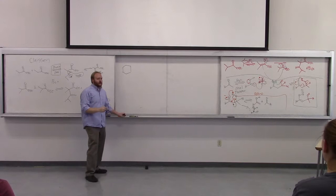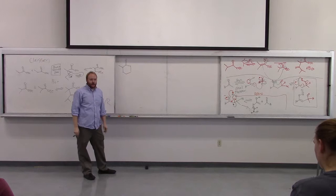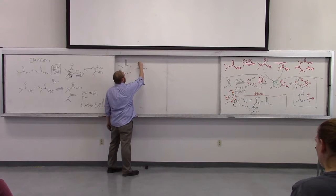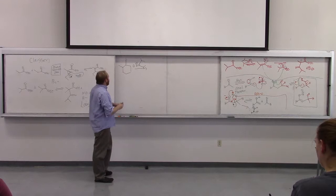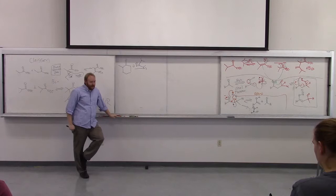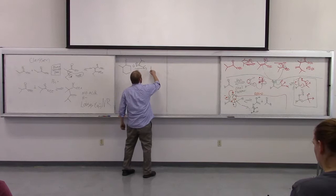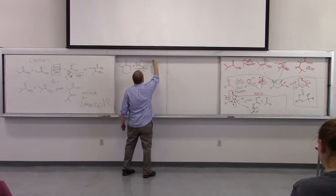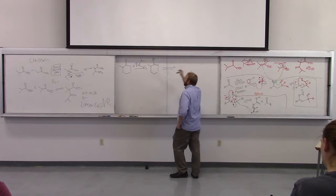To show an example with a non-symmetrical ketone: if we use LDA, we form the kinetic enolate. LDA will deprotonate the less substituted side, giving us the less-substituted enolate. The mechanism of the basic aldol is: form whichever enolate you want, then throw in your ketone or aldehyde.